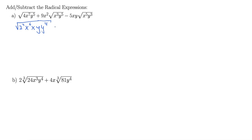Next term, we have 9x squared still hanging out in the front. Inside, x cubed I'm going to write as x squared times x — I'm trying to find even exponents because I want something divisible by 2 since I'm taking square roots. Same thing with y: y to the 5th becomes y to the 4th times y.